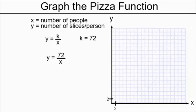We can use this equation to figure out how many slices each person gets depending on how many people are sharing the pizza. Let's say there are only two people. Well, then the 72 slices are divided by the two people, and we get 36 slices per person. That is a big meal.